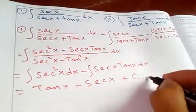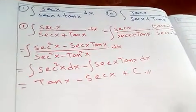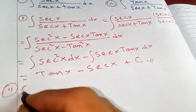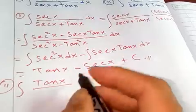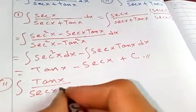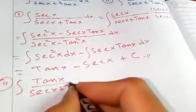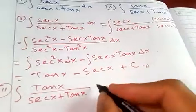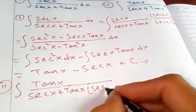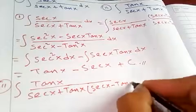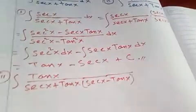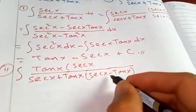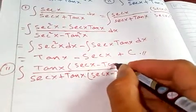That is our answer for number one. For number two, we apply the same rule — rationalize the denominator. Since the denominator is positive, we multiply by secant x minus tangent x over secant x minus tangent x, applying the same conjugate approach on both numerator and denominator.